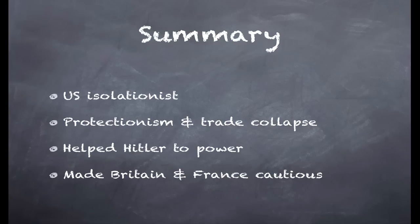In summary, the United States became increasingly isolationist, trying to deal with problems within the United States. Protectionism caused a collapse in international trade, which made the Depression even worse. It helped Hitler get to power in Germany. And it made Britain and France more cautious, as they knew they couldn't depend on the United States and were dealing with the problems of the Depression in their own countries.